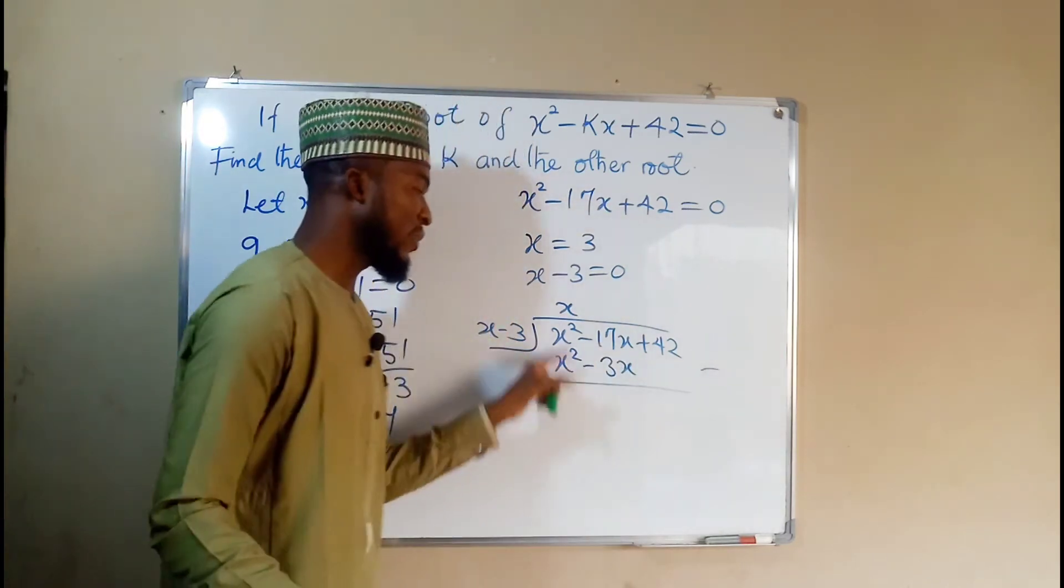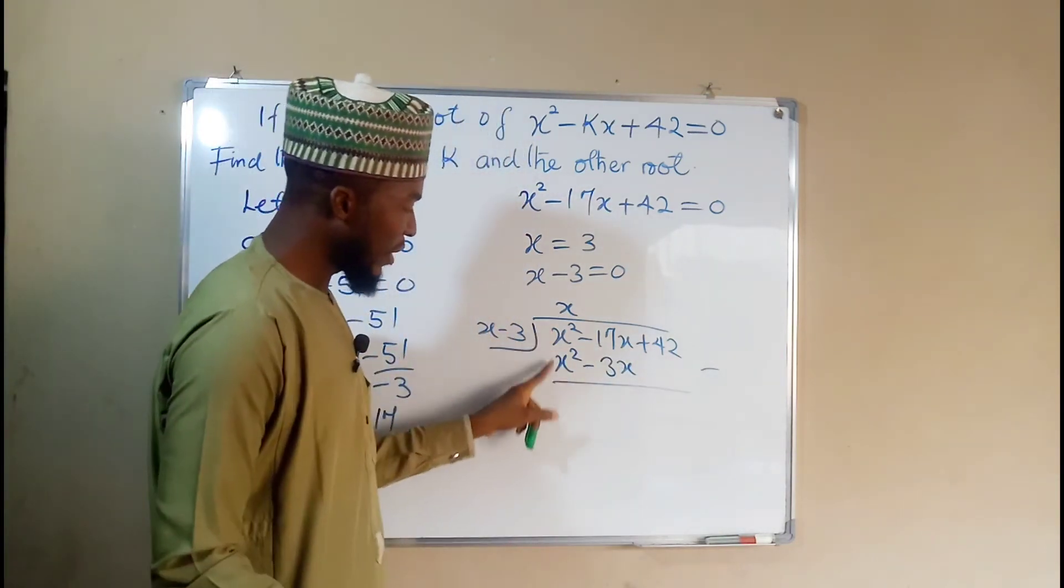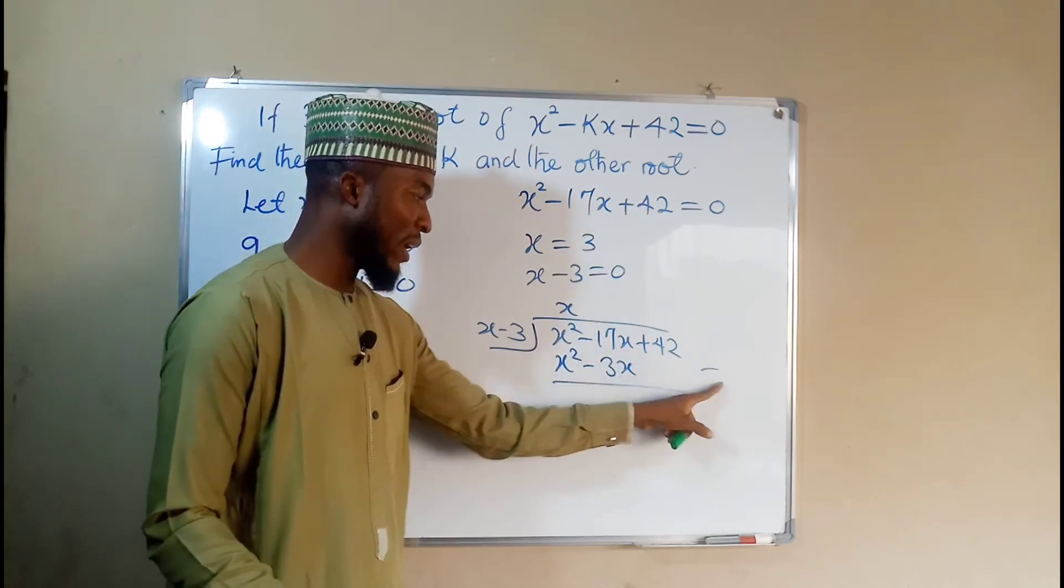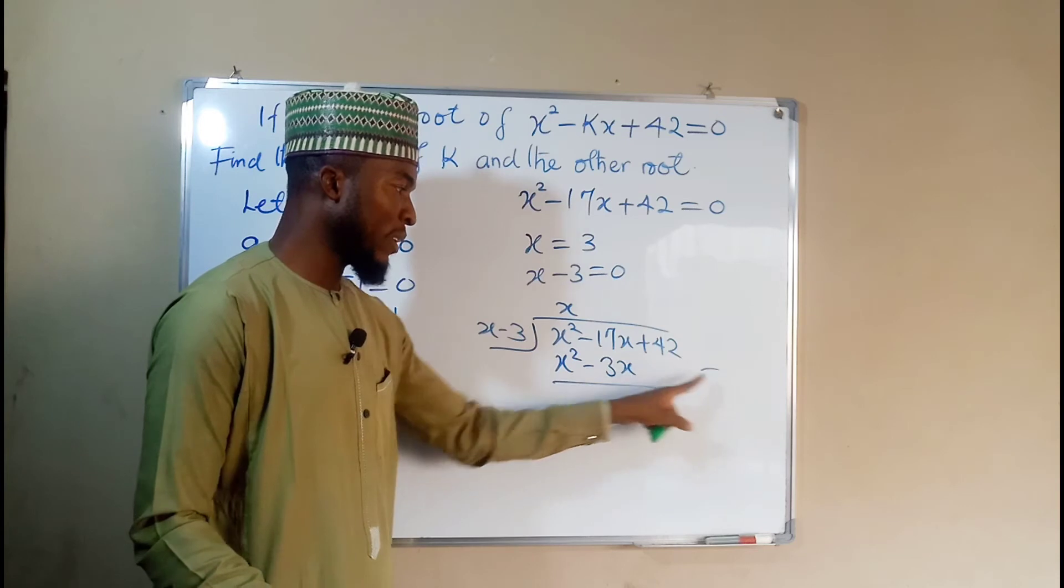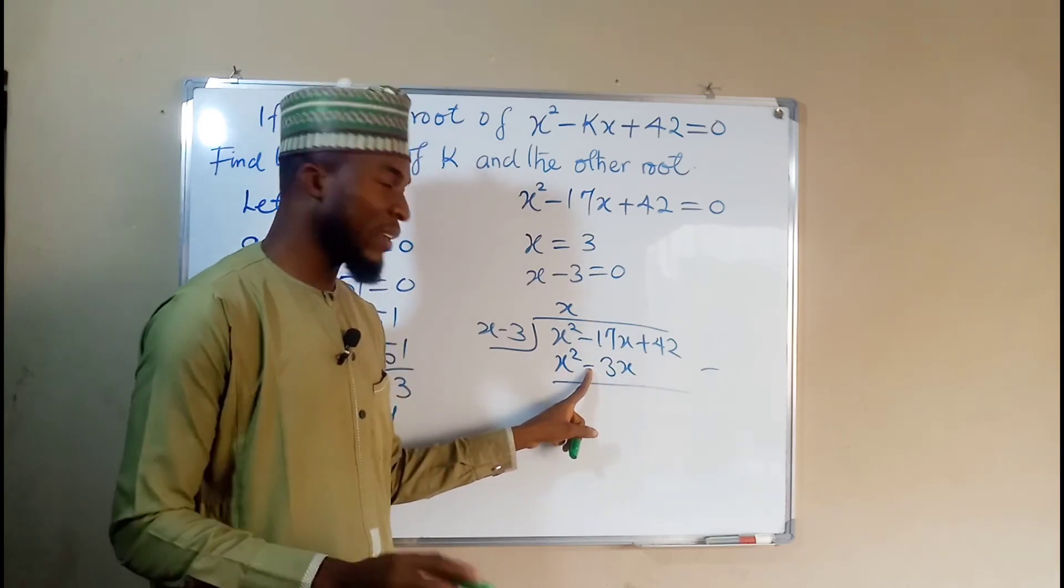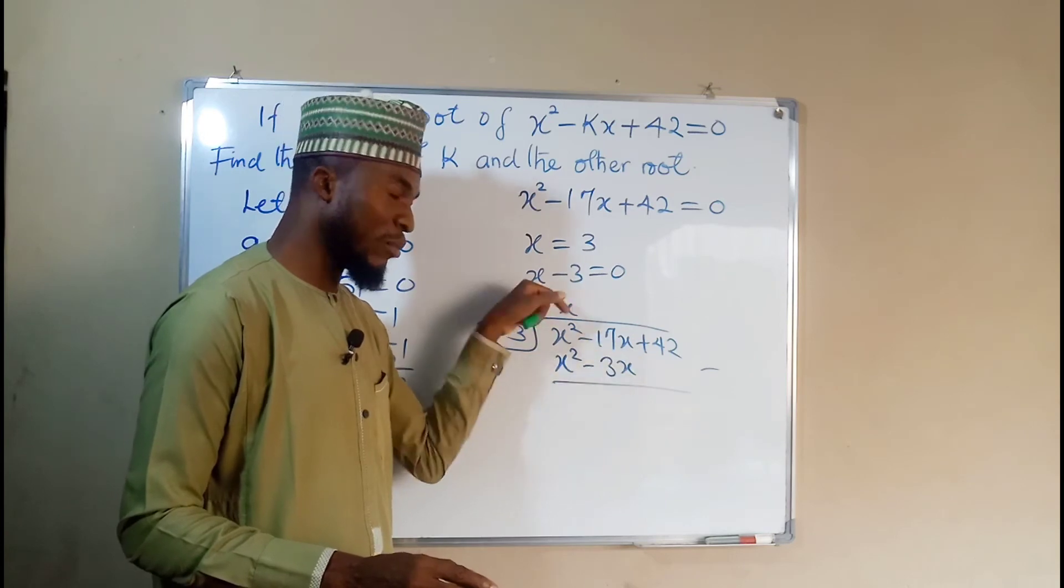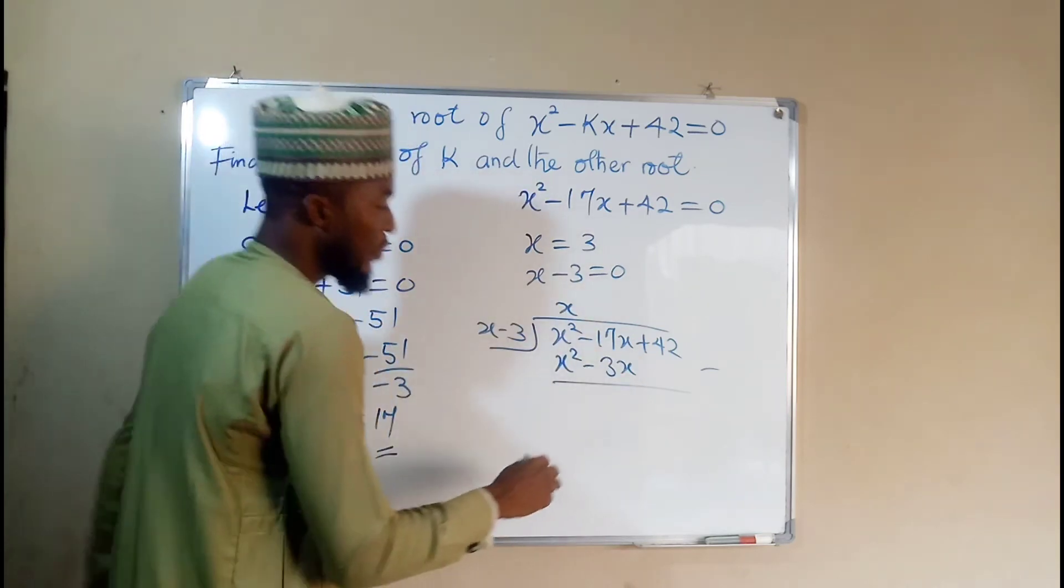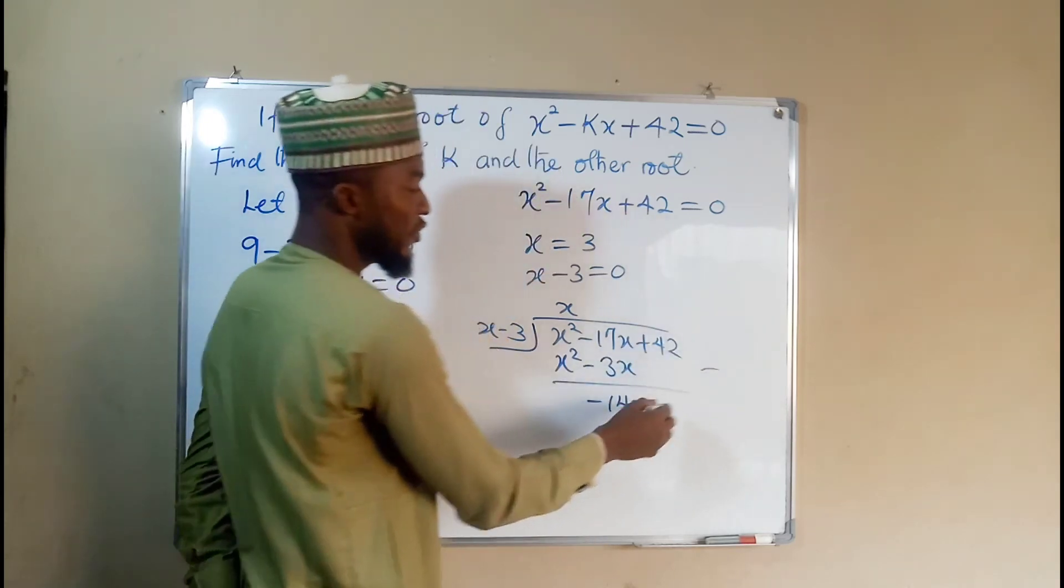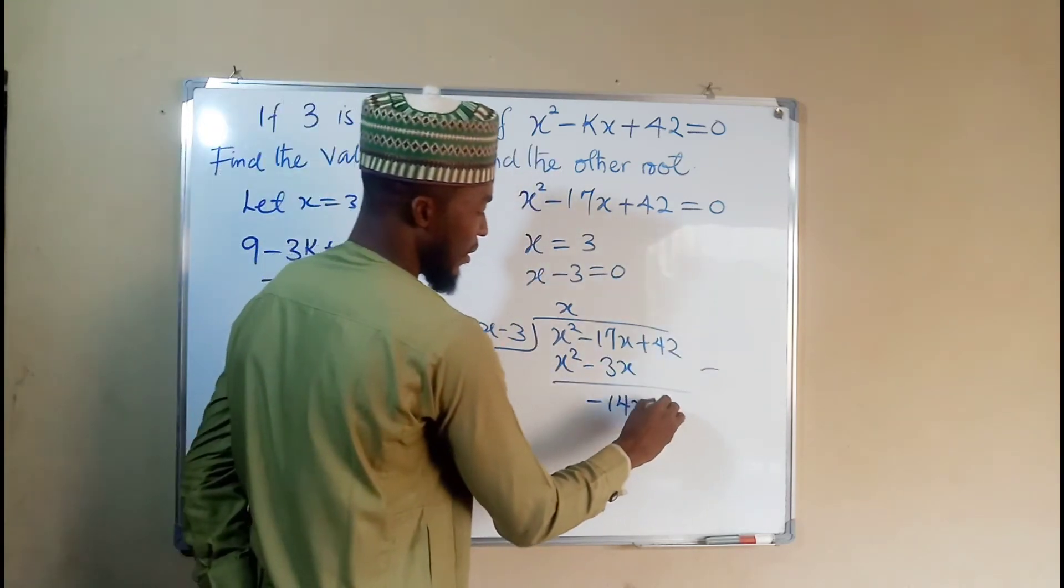Then we subtract these two functions. This minus this is 0. Negative 17x minus negative 3x. This minus will change this to positive. So it is like saying negative 17x, then plus 3x, which is going to make it negative 14x. Then 42 minus 0 is still 42.